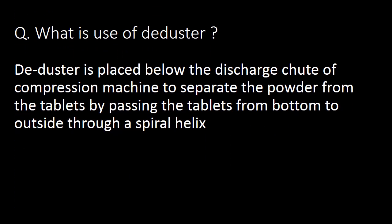Next question: what is the use of a D-duster? A D-duster is placed below the discharge chute of the compression machine to separate powder from tablets by passing the tablets from bottom to outside through a spiral helix.